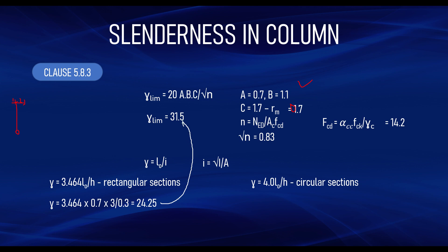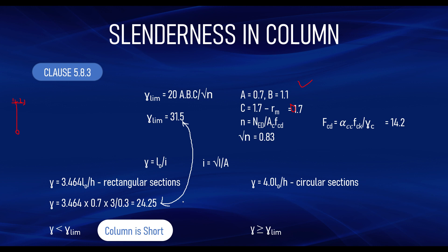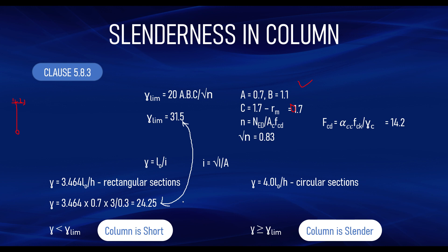Comparing the slenderness ratio to the limit: if the ratio is less than the limit, the column is short. If the ratio is greater than the limit, the column is slender. In our example, the slenderness ratio of 24.25 is less than the limit of 31.5, so the column is confirmed to be a short column. This is the procedure for determining whether a column is short or slender by referring to Clause 5.8.3 of the Eurocode. Please like this video and subscribe if you haven't already.